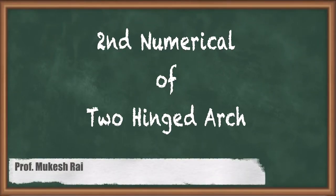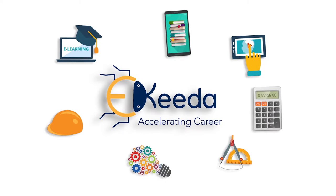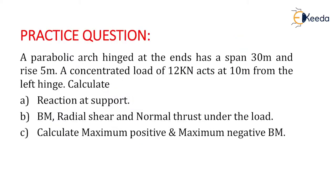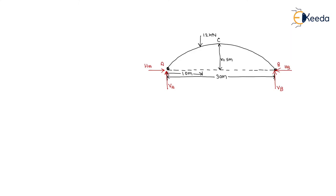Hello students, today we are going to study the second numerical of two-hinge arch. The question is: a parabolic arch hinged at the ends has a span of 30 meters and a rise of 5 meters. A concentrated load of 12 kilonewtons acts at 10 meters from the left hinge. Calculate the reaction at supports, bending moment, radial shear, normal thrust under the load, and the maximum positive and maximum negative bending moment.